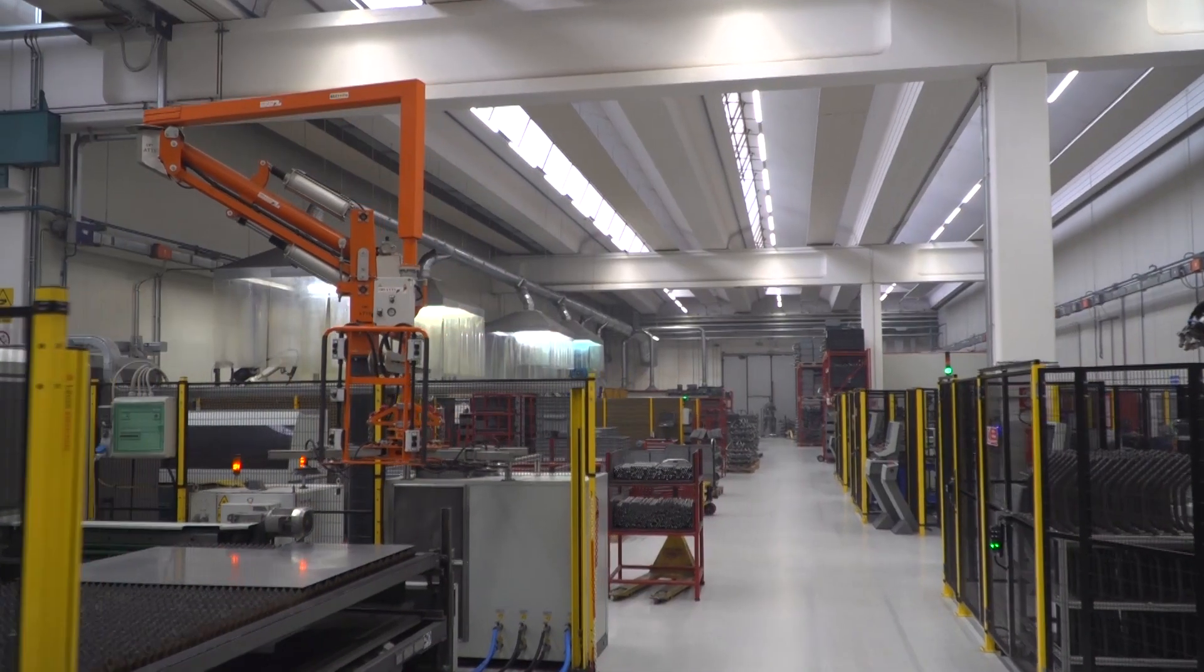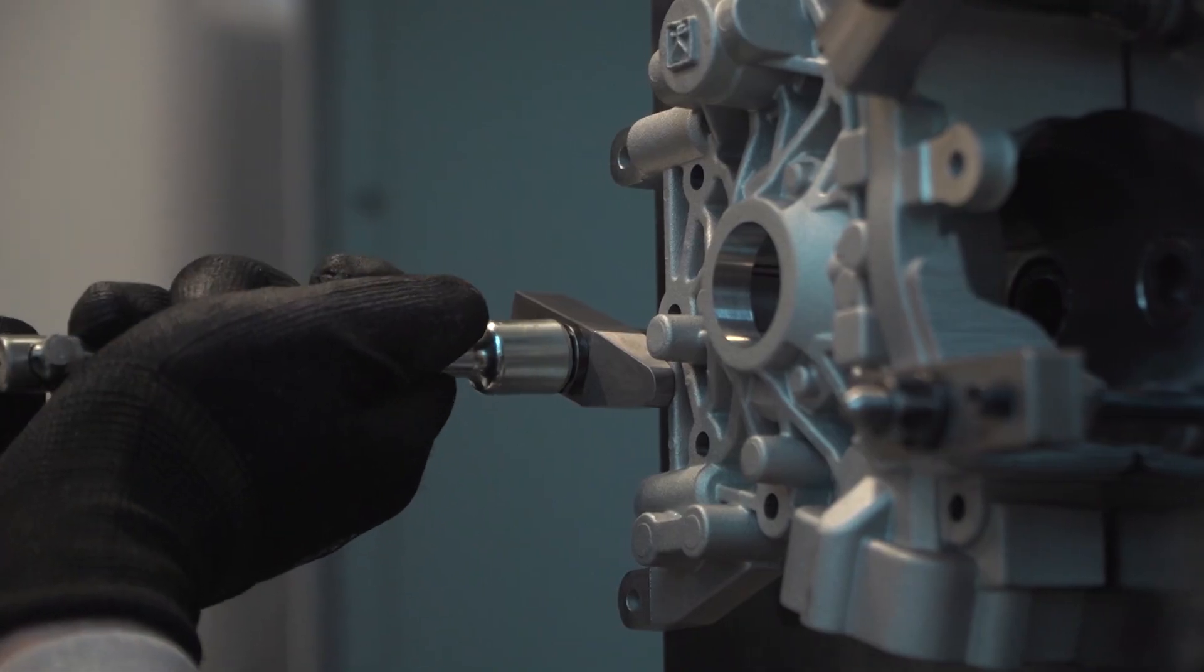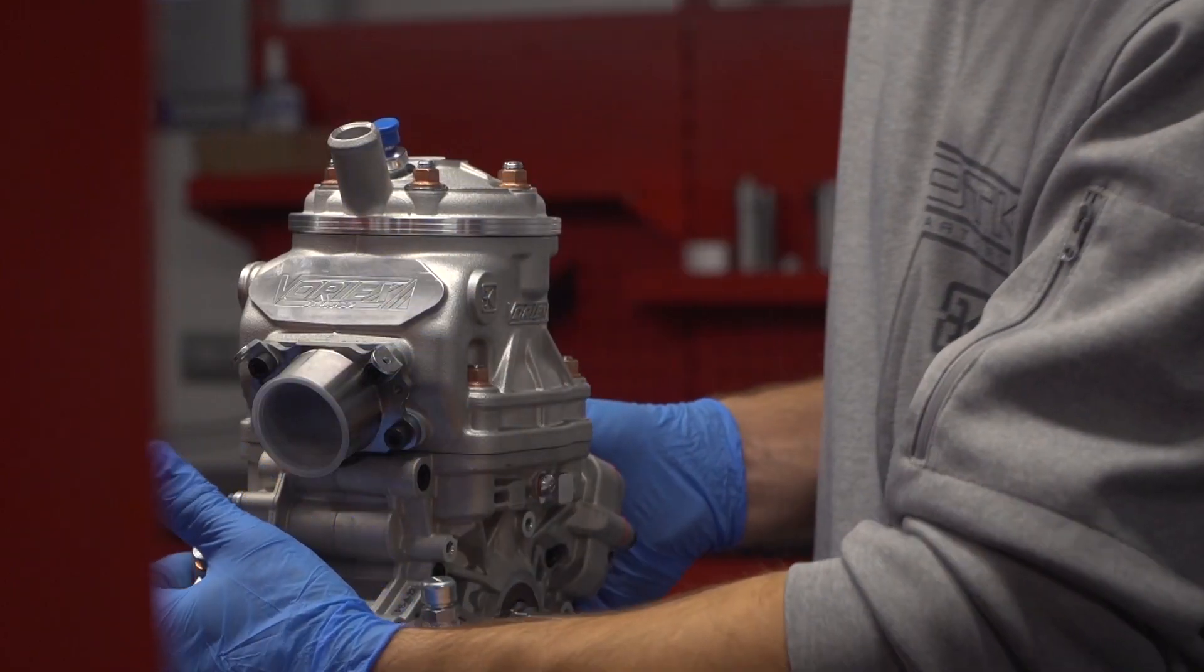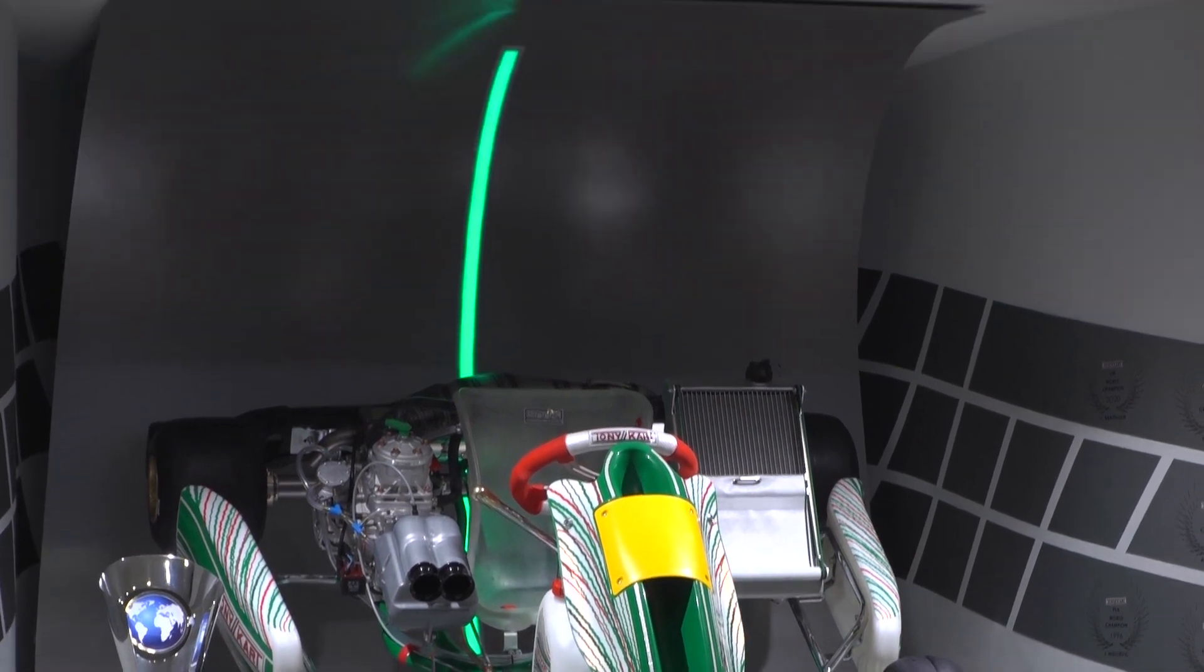In the Italian factory of Bovale, kart chassis, engines and accessories are conceived, designed and manufactured following the 100% made in OTK philosophy.